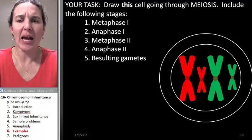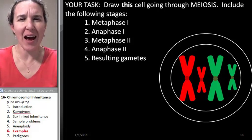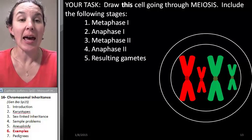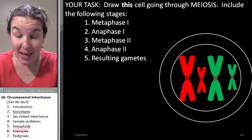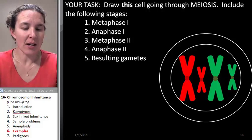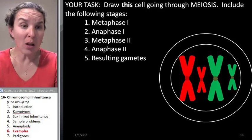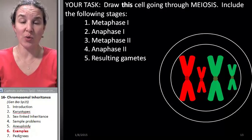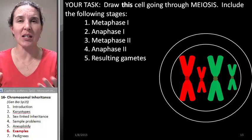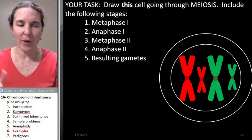Let's look at an example of how aneuploidy happens. It's just shocking how DNA, protein synthesis, meiosis and mitosis all tie into concepts in heredity. You can't separate them.